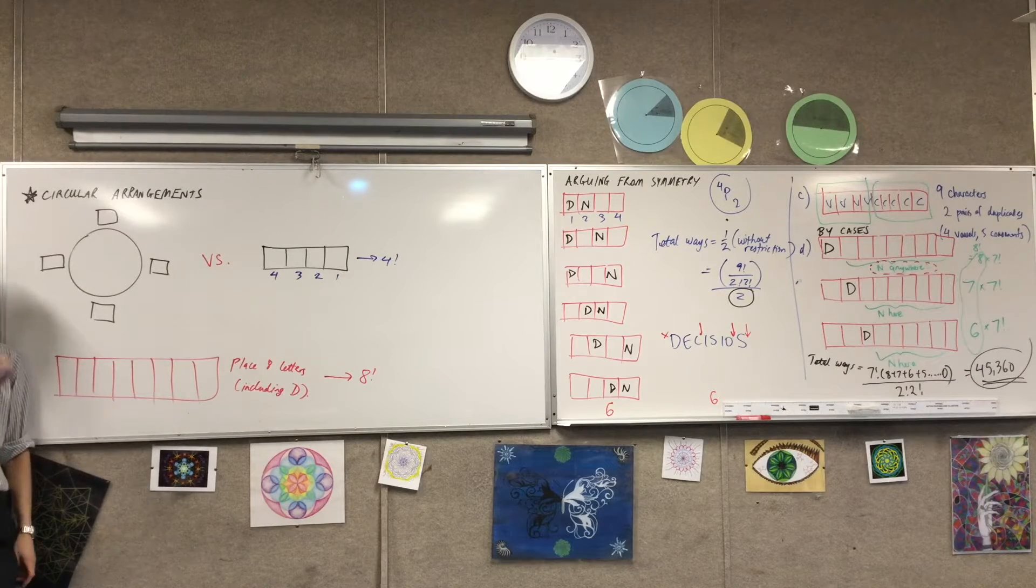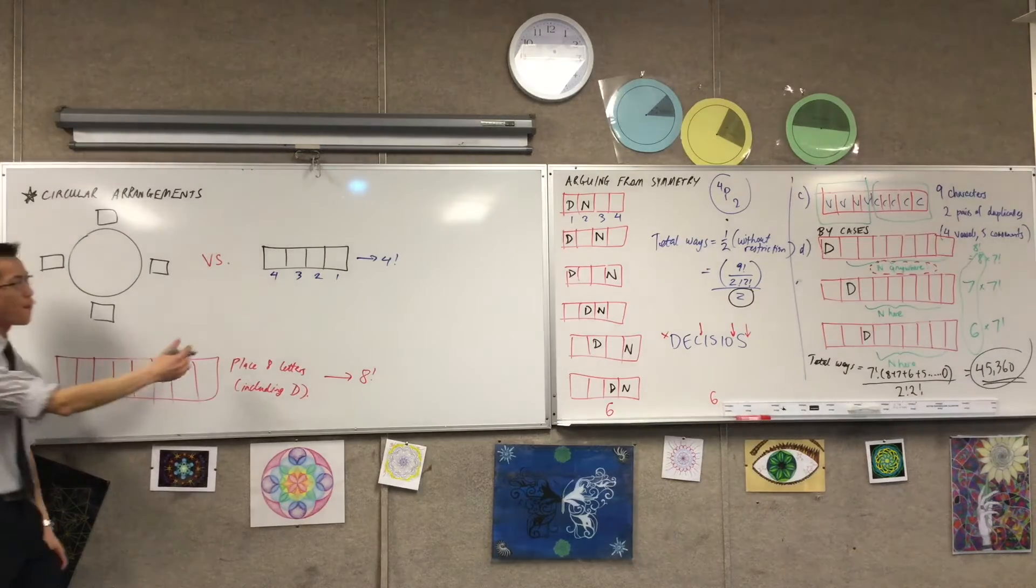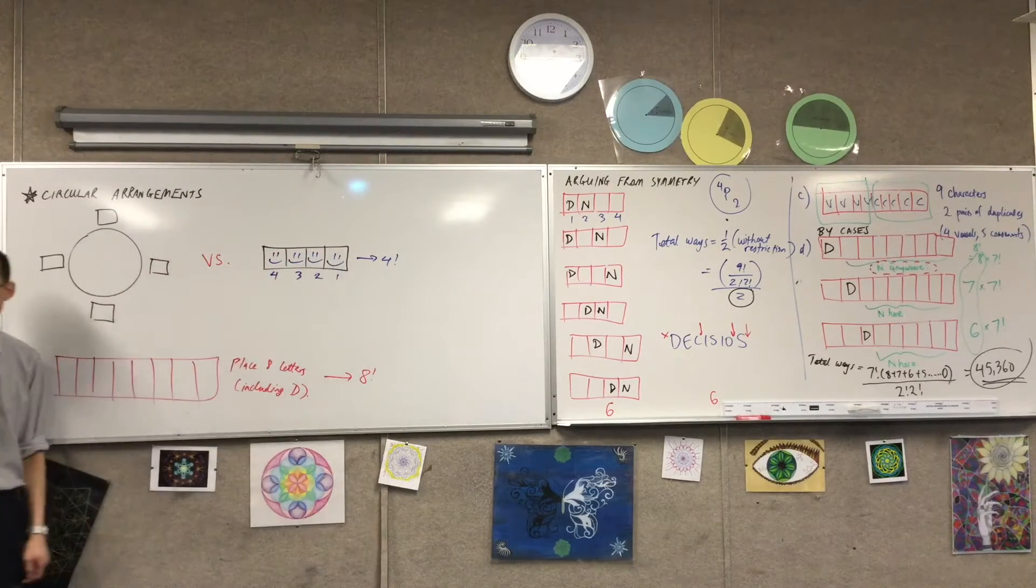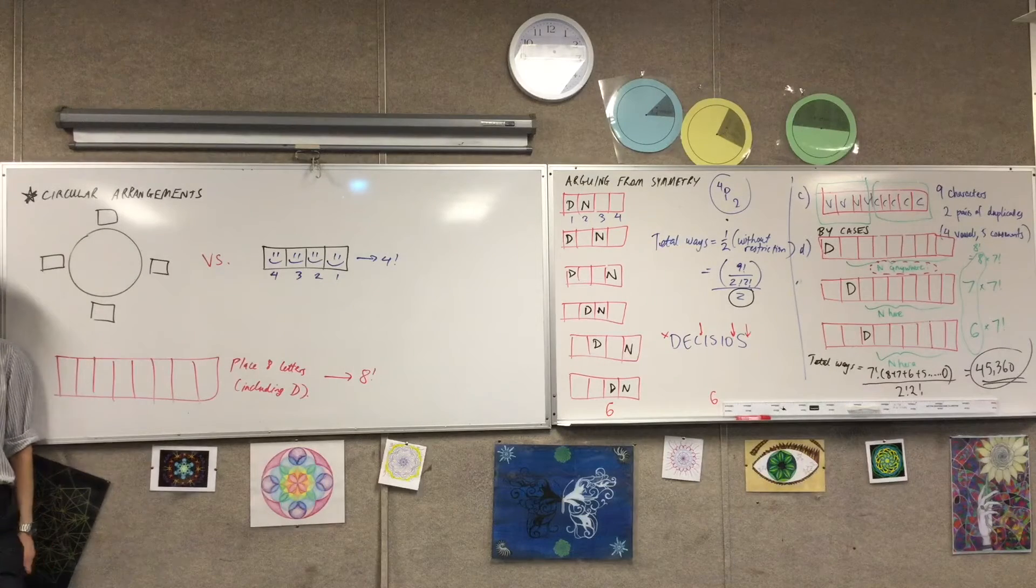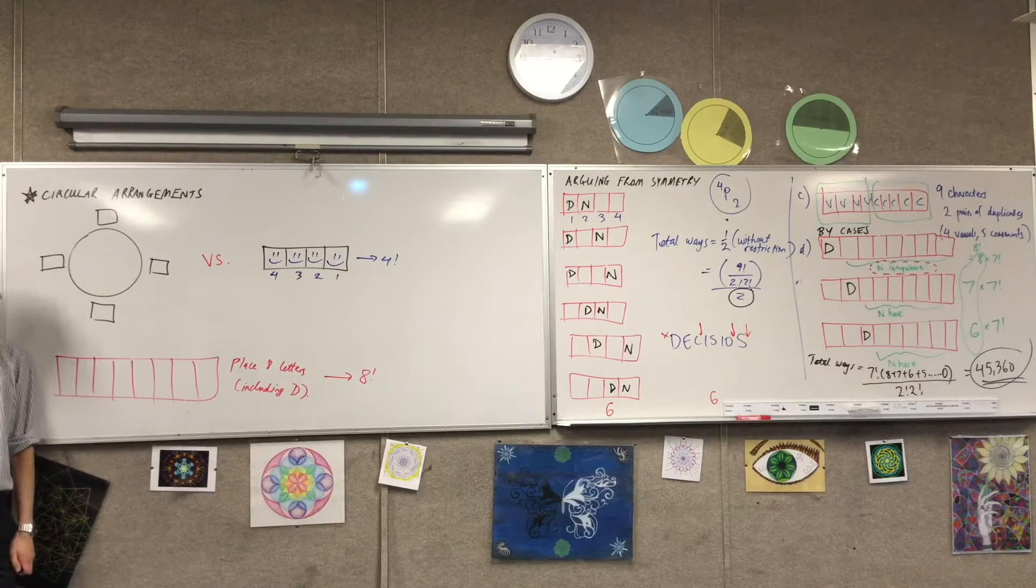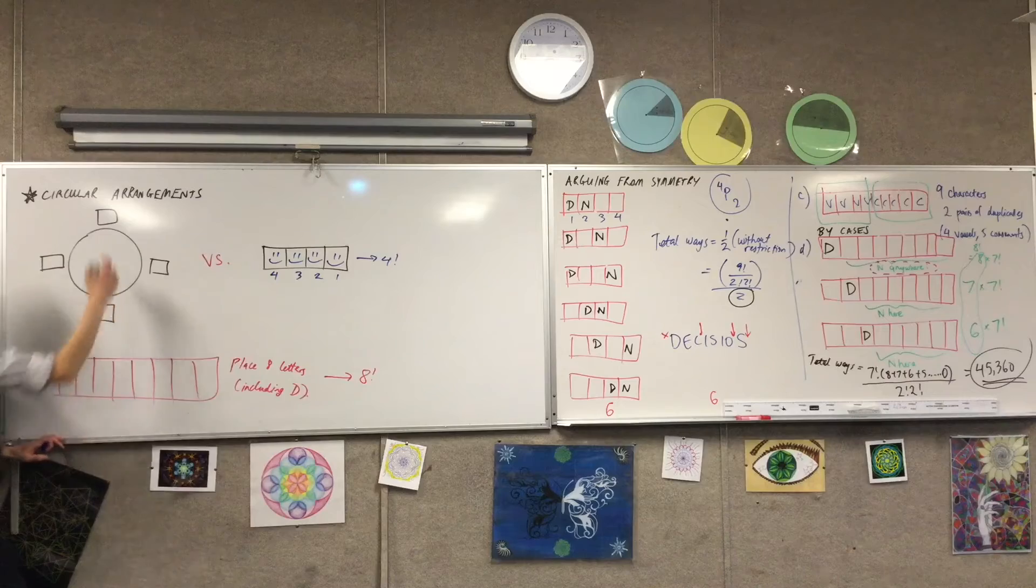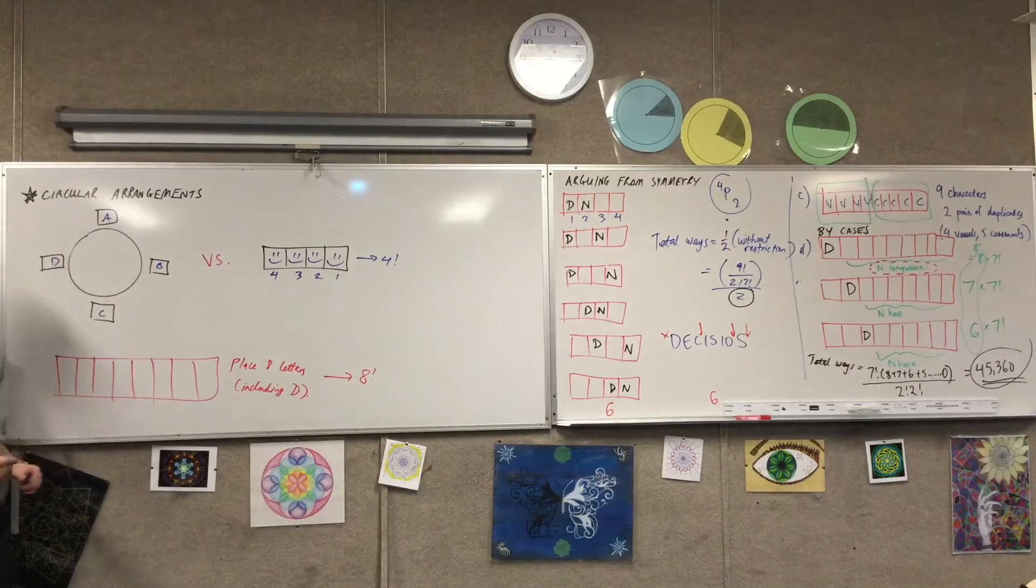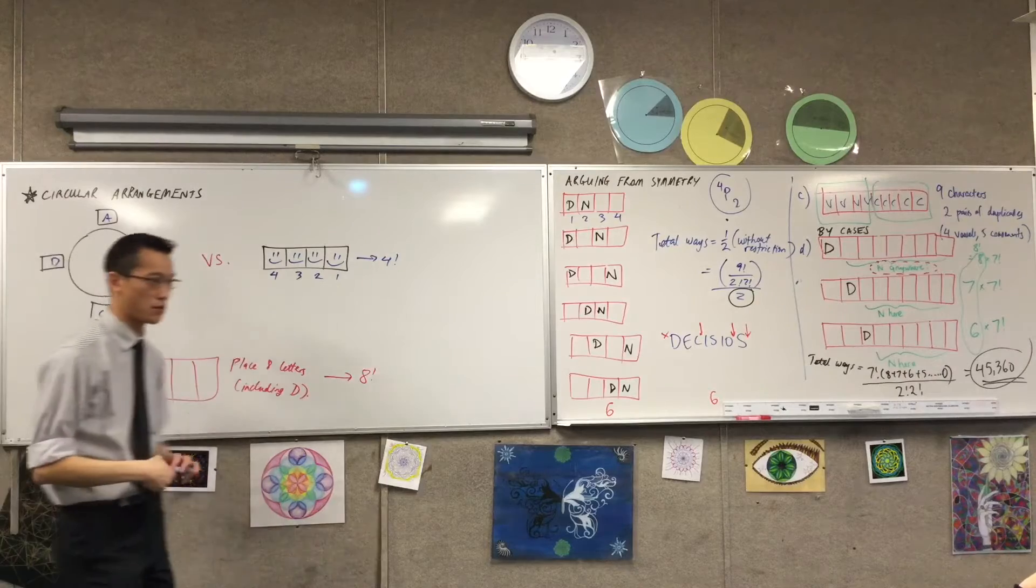But when you take the same four people and you want to place them around a table, there's one minor difference, which is that if you put, for instance, if you put A here, and then B here, and then C here, and then D here, that's one of the possible arrangements.